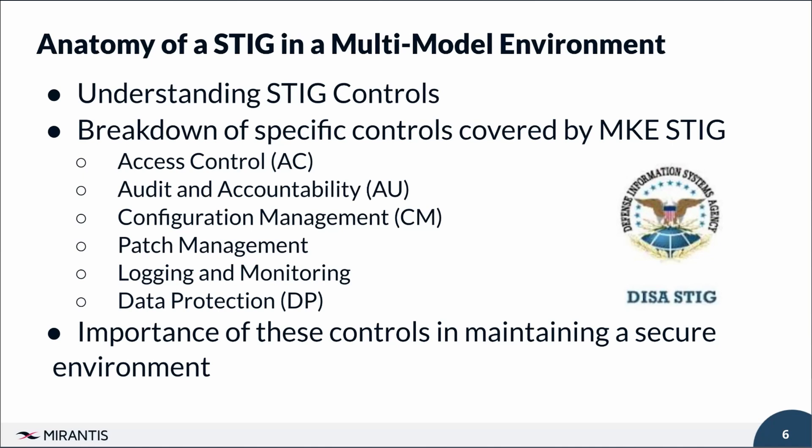Access control measures prevent unauthorized users from accessing sensitive data. Network security controls protect against various network-based threats, ensuring secure communication channels. Configuration management ensures all components are configured securely, reducing risk from misconfigurations. Regular patch management protects against known security exploits, while comprehensive logging and monitoring enable rapid detection and response to incidents. Data protection measures such as encryption safeguard sensitive information. A current STIG also indicates a product like MKE has undergone rigorous testing, reflecting vendor technical expertise and commitment, and demonstrates the vendor's ability to help customers achieve broader compliance goals such as FedRAMP authorization.